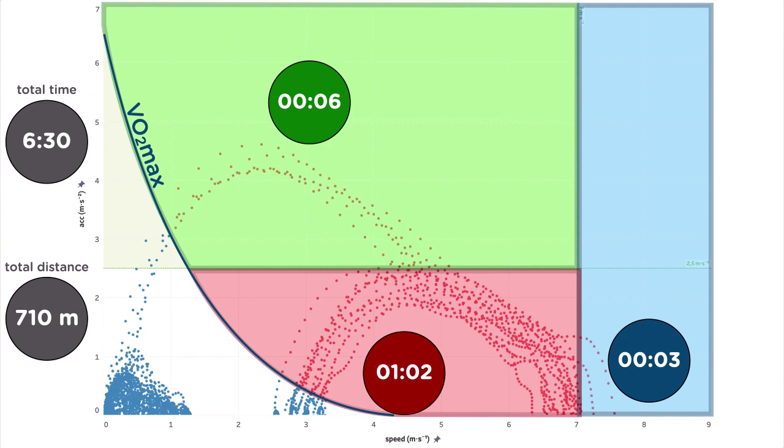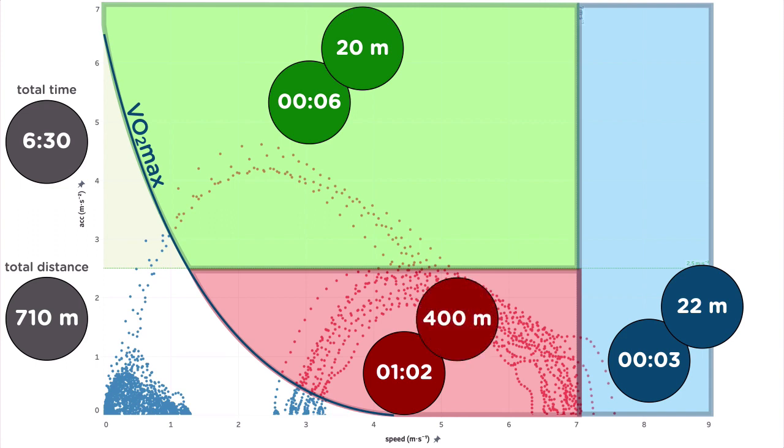Things are even clearer if we refer to distance instead of time. The athlete covers almost 20 meters both in high speed and high intensity areas, and even 400 meters in the red area, which is more than 50% of the total distance.